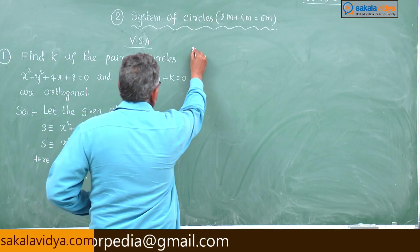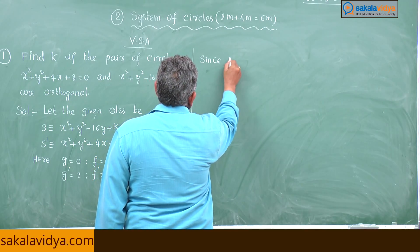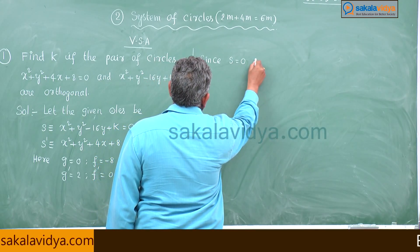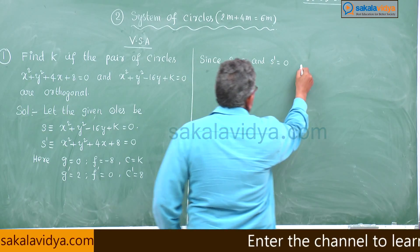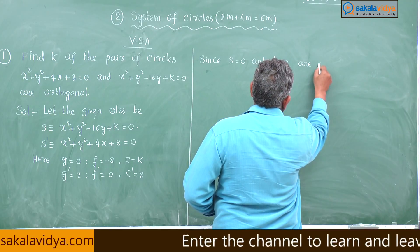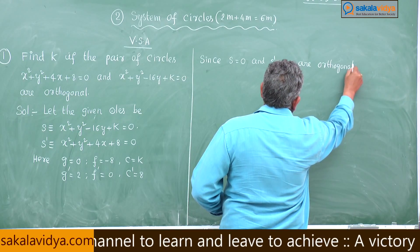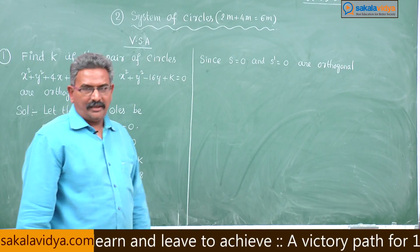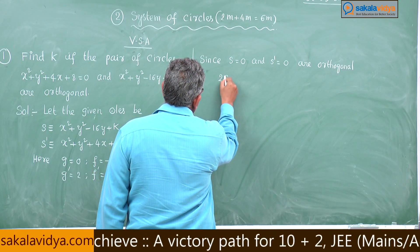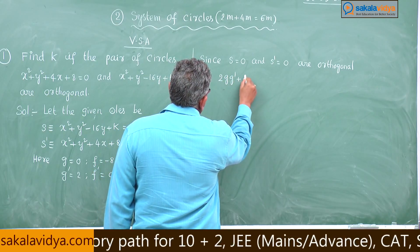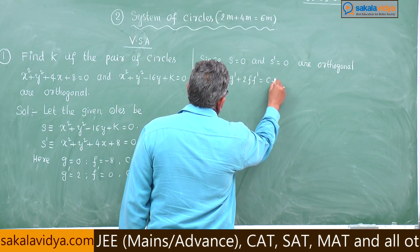Since S = 0 and S' = 0 are orthogonal or they cut orthogonally, we have the condition: 2gg' + 2ff' = c + c'.